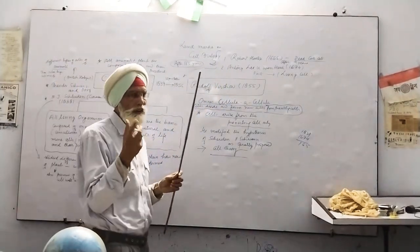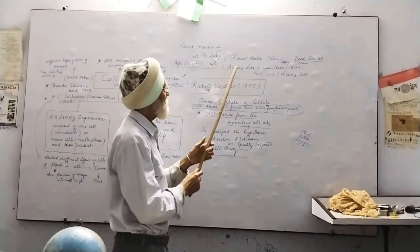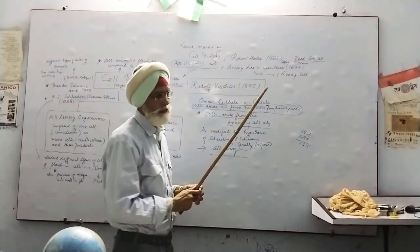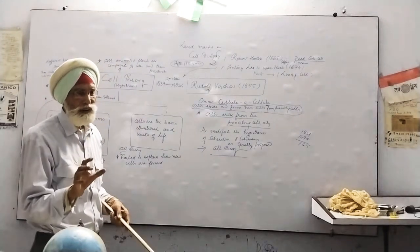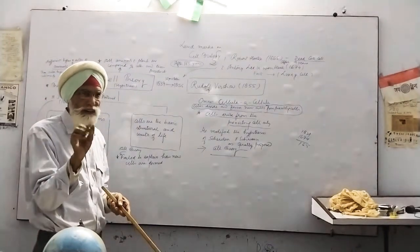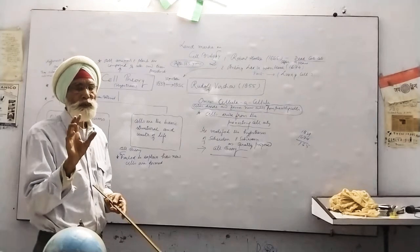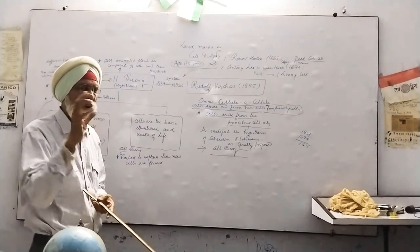Now the question, who discovered cell? The answer is Robert Hooke. And what type of cell he discovered? Only dead cell, cork cell, having a box-like structure in the cork. He was first to observe box-like structure to which he called cell.